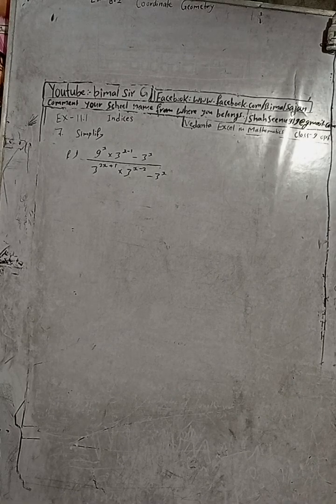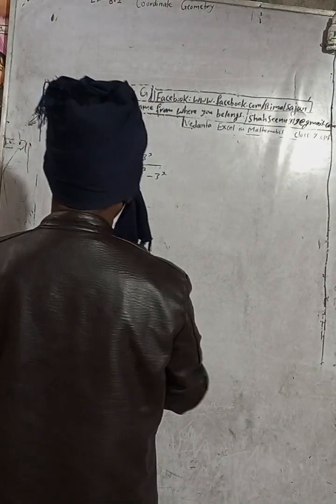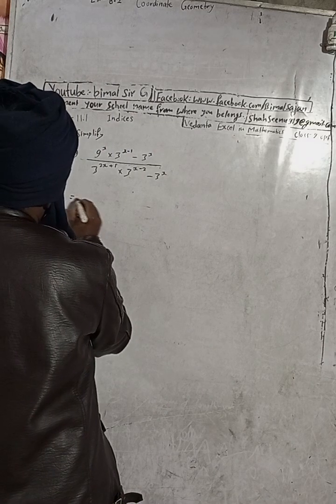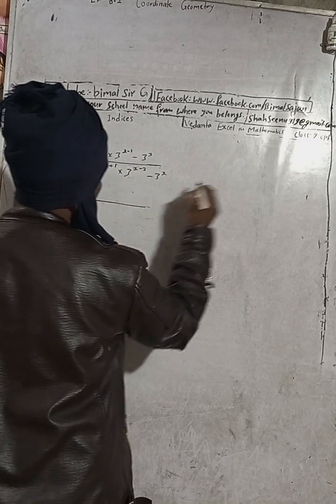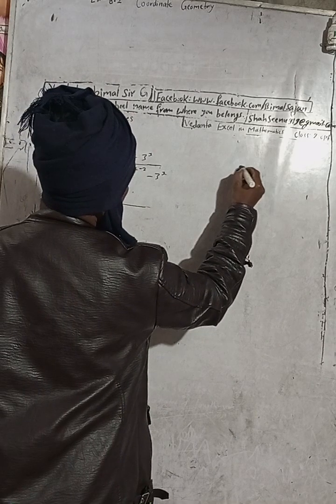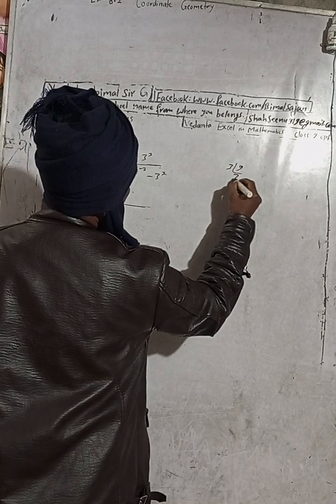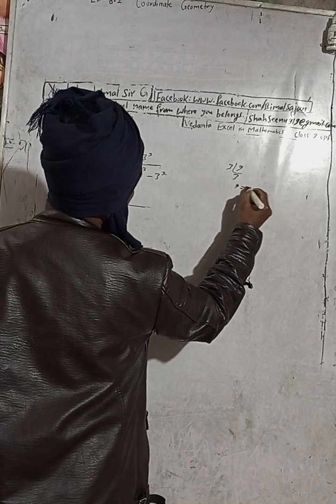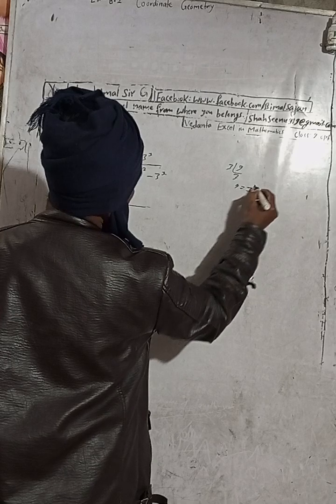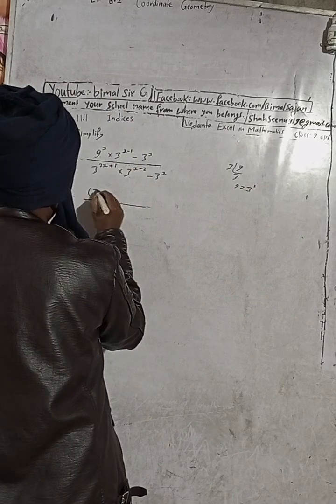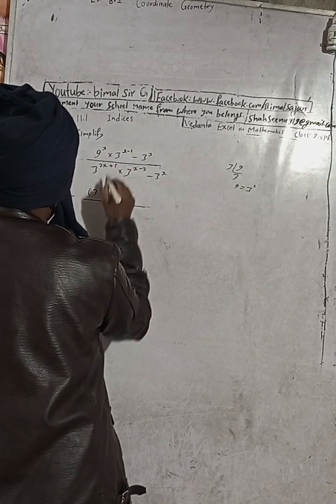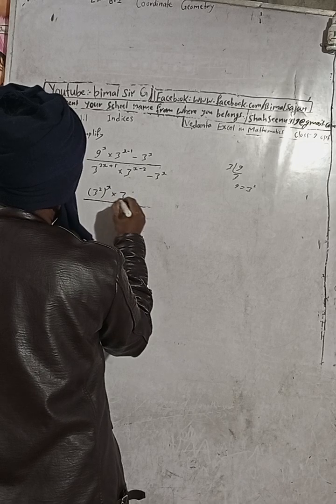Okay, this is question number seven. Here is 9, so the factor of 9 is 3. 9 equals 3 squared. So I have 9 in place of 9, 3 square, and this power x into this is 3 to the power x minus 1.